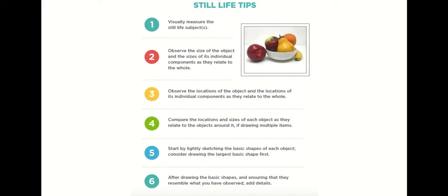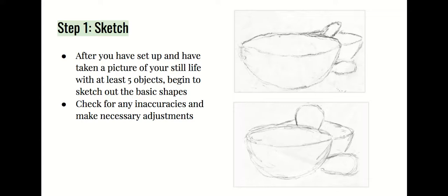Number five: start by lightly sketching the basic shapes of each object — consider drawing the largest basic shape first. Do not add details until after you have the basic shapes down. After drawing the basic shapes and ensuring they resemble what you observed, begin to add details. Let's take a look at how Ms. Parlow goes about creating her still life.